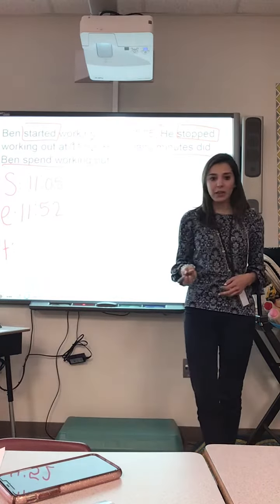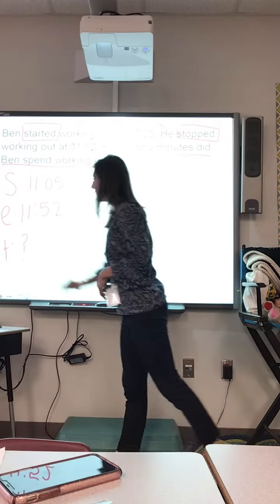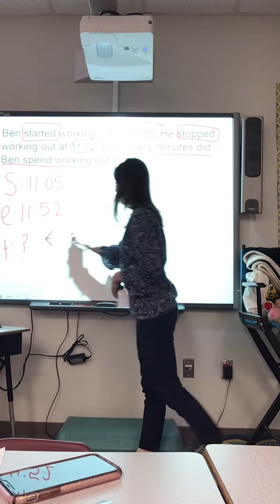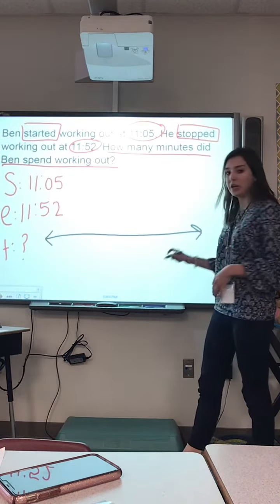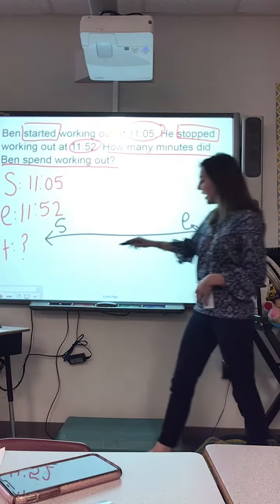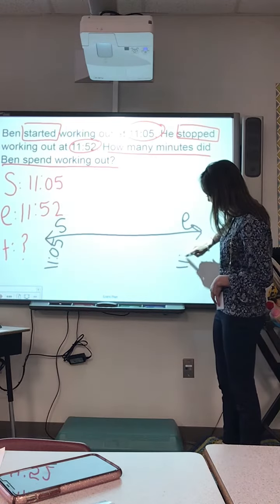We don't know how long it took him to work out, so we're gonna put a question mark for our total time. Then I tell the kids to do a number line, and we put our starting time and our ending time. Our starting time is 11:05, and our ending time is 11:52.